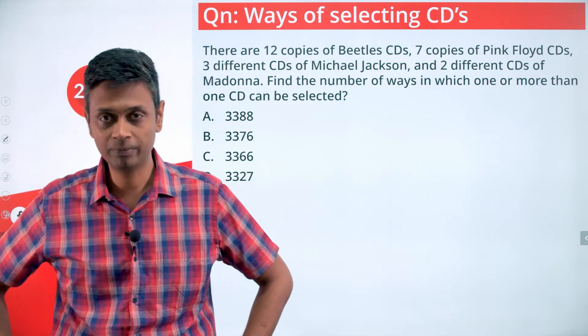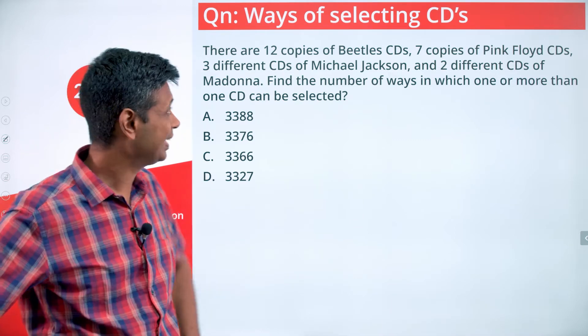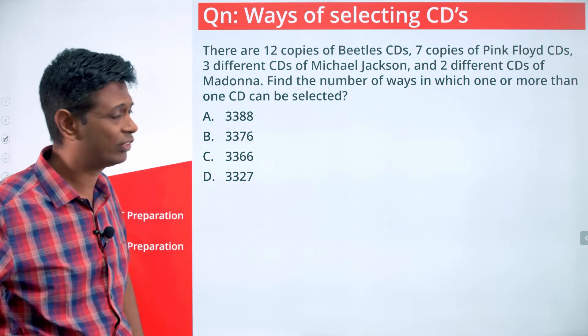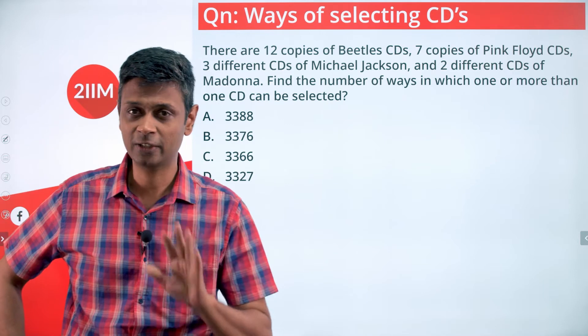We have 12 copies of a Beatles CD, 7 copies of Pink Floyd CDs, 3 different CDs of Michael Jackson, and 2 different CDs of Madonna - we'll be treating them differently. What do I mean by that?